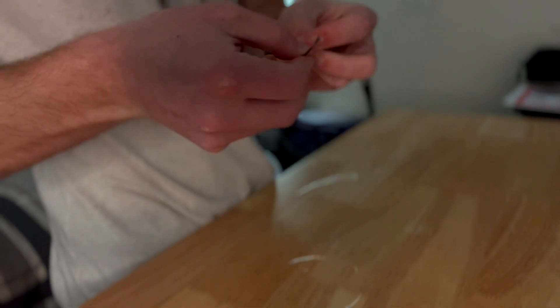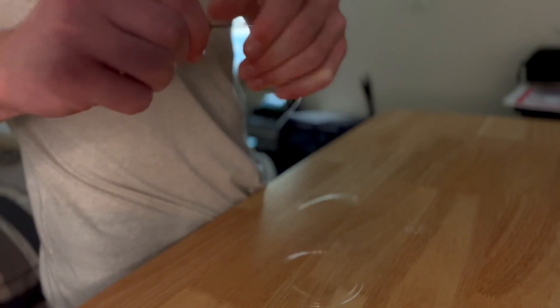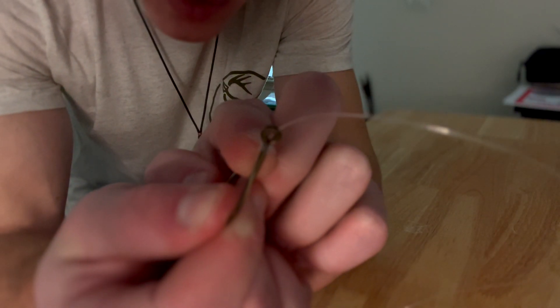Once you've done that, take the excess line and pull it through the loop. Hold it while you pull the main line. This line right here should be rolling against the eye of the hook. And now you're done. That is the snell knot.